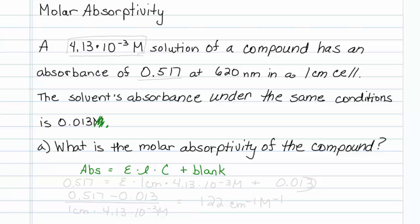Let's substitute our variables now. The absorbance is 0.517. E represents molar absorptivity, that's what we're solving for. The path length is 1 centimeter. The concentration is 4.13 times 10 to the minus 3 molar, and our blank is 0.013.